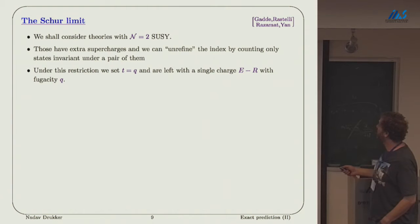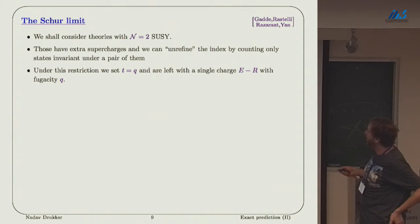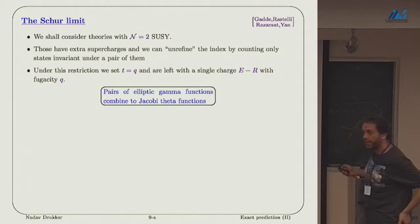As I should have said before, but Leonardo already pointed out, my focus is on theories with at least N equal 2 supersymmetry. Then there is a particular limit, which will be useful, where we can unrefine the index. We have more supercharges, so we count states that preserve more than only one of the supercharges. We choose a pair of supercharges. T is set to Q, and then, miraculously, there is no dependence also on P, so we just get the fugacity Q.